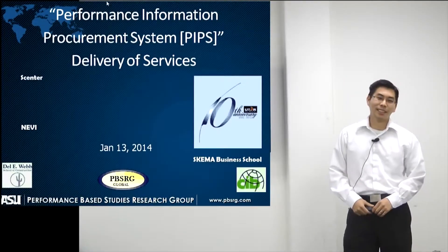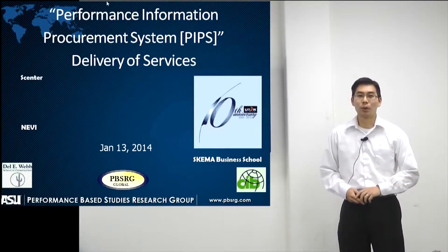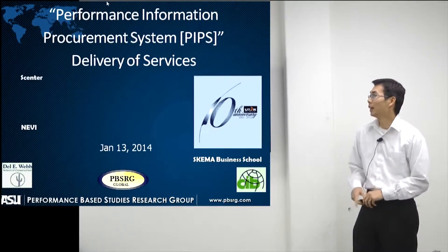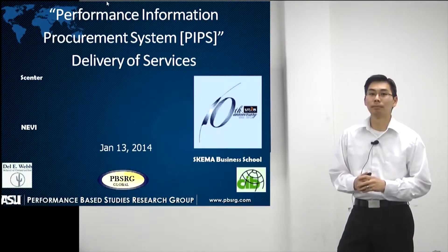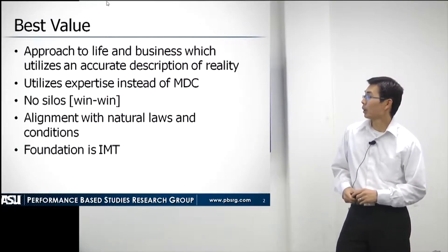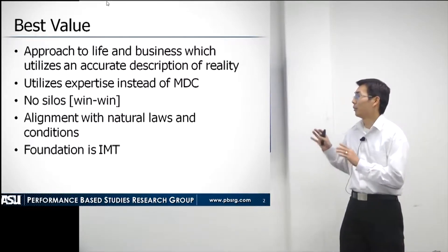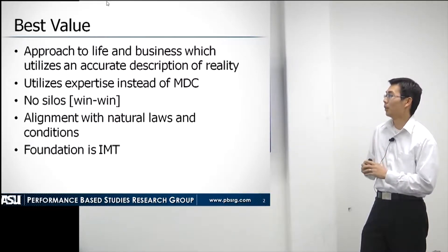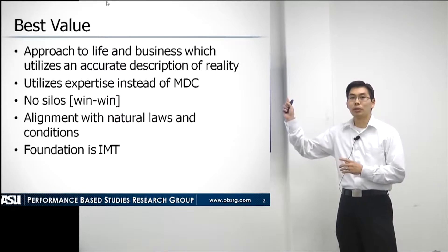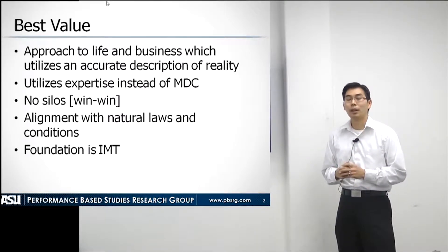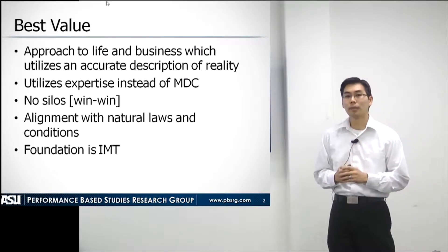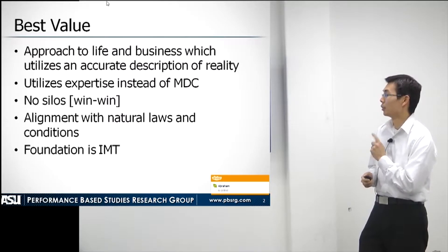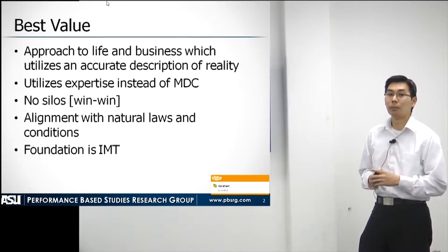Good afternoon. My name is Jacob Kashiwagi and today we're going to be reviewing the Performance Information Procurement System — the basics in about 30 minutes. The idea of the best value approach comes from the Information Measurement Theory — simple principles to help increase efficiency. These principles have been implemented in the PIPS system. If you would like to understand the principles more, you can go to the IMT manual.